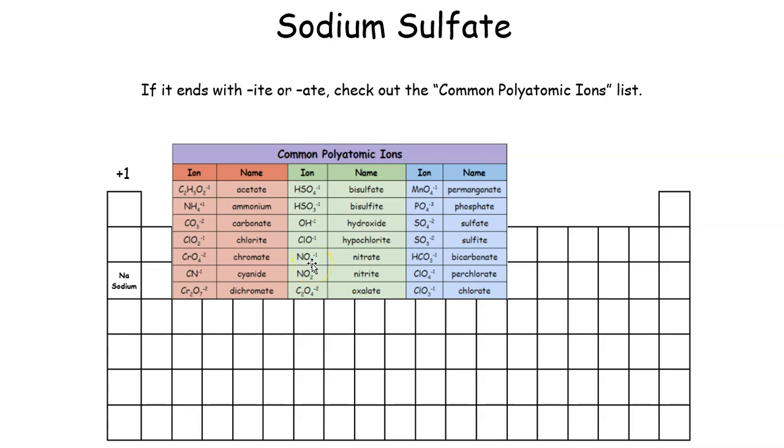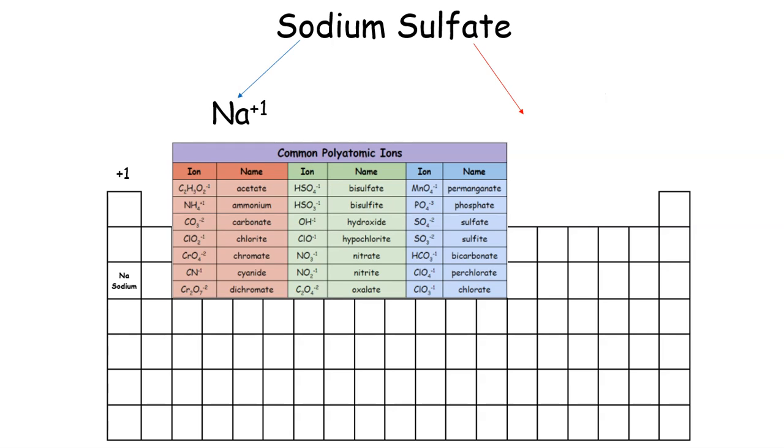Let's look at sodium sulfate. Sodium is NA, it's actually a metal on our periodic table. It's in column one, so it'll have a plus one charge when it forms an ion. So you have Na+1.